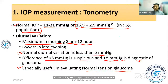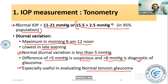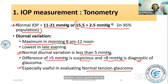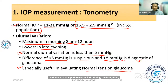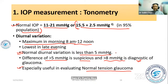In normal tension glaucoma, when the patient comes to the OPD, the IOP may appear normal at that single measurement. However, during the day, at night, or in the early morning, the IOP can be elevated, causing optic nerve damage. This is why normal tension glaucoma patients typically show significant diurnal variation.